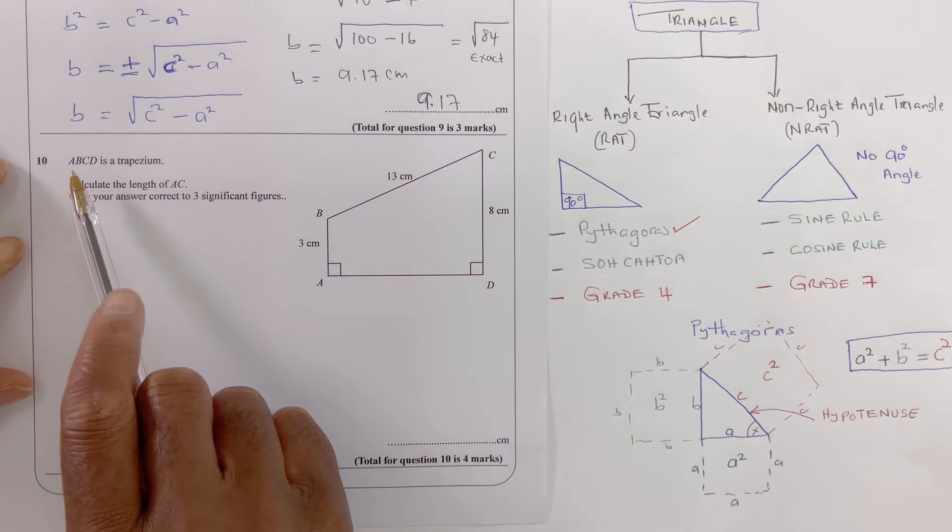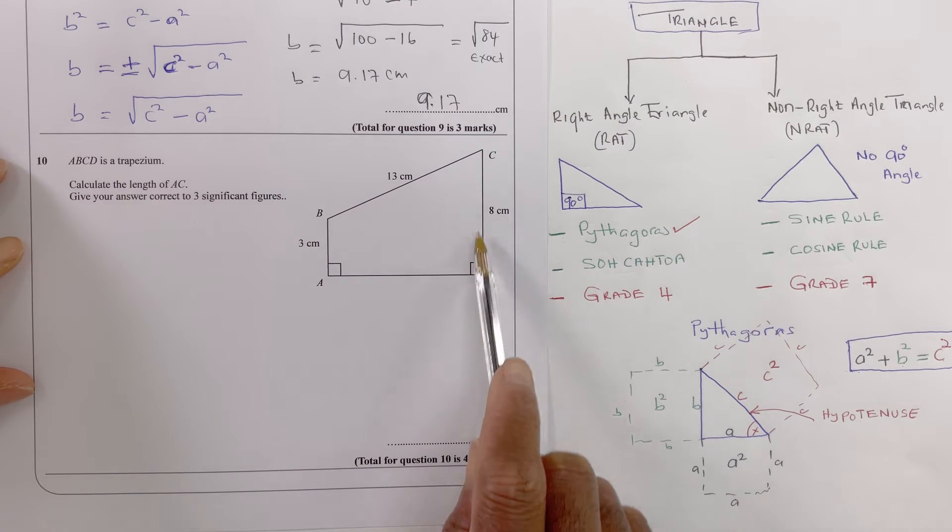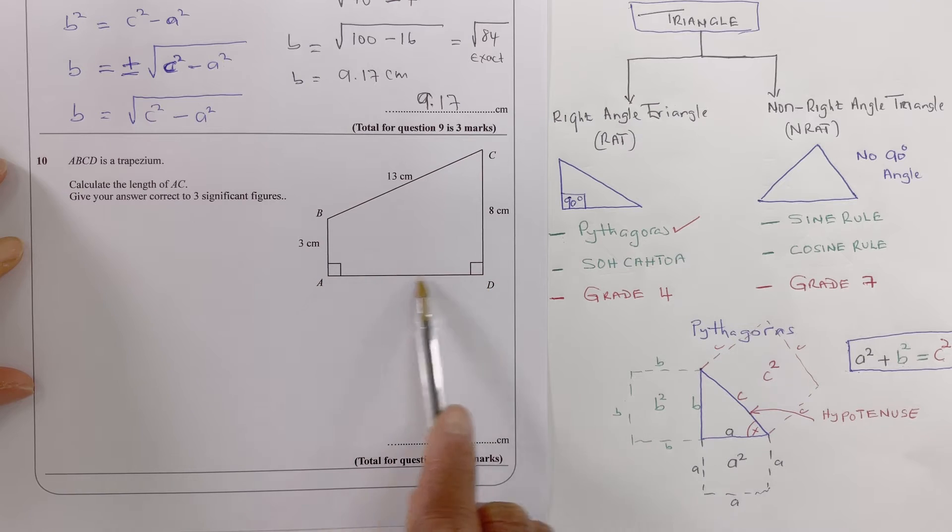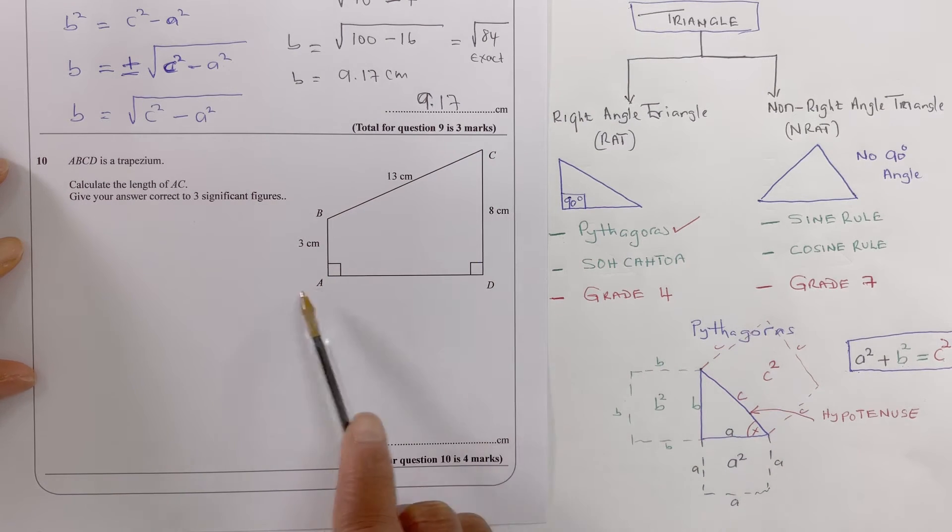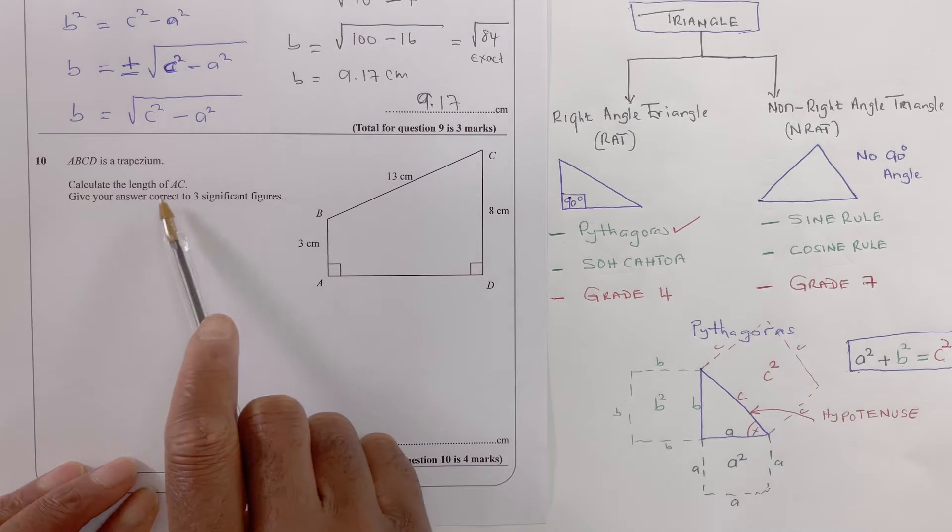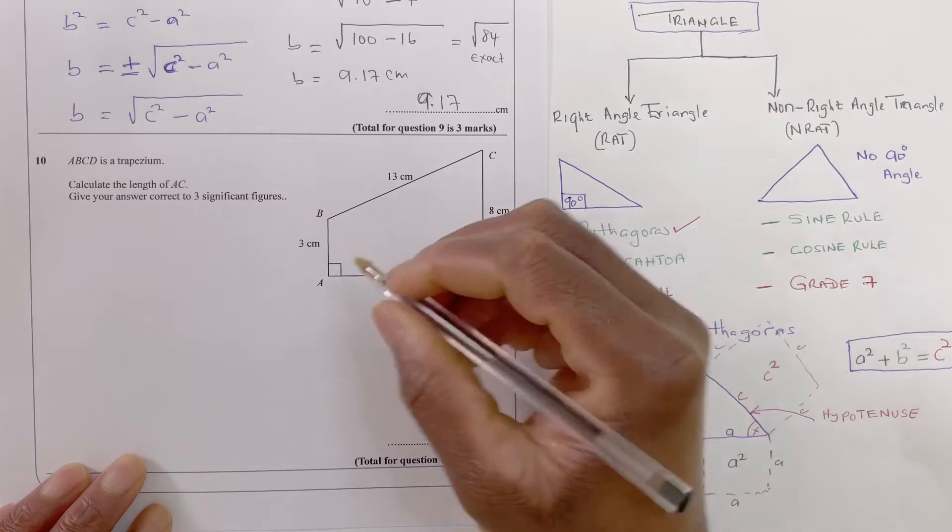Question 10: I have got a trapezium. A trapezium has two parallel sides and the perpendicular height. Now you've got a slant, that's a trapezium. We need to calculate the length AC, so the length from there to there. So now will be the AC we need to calculate.